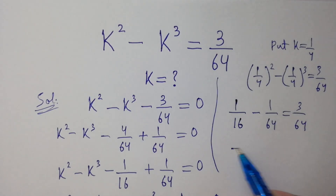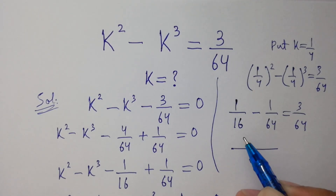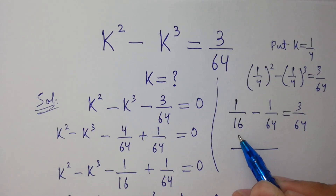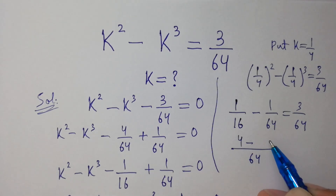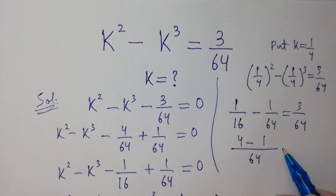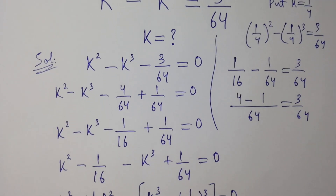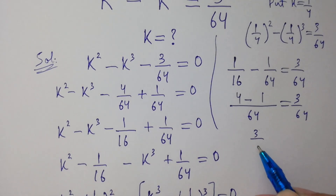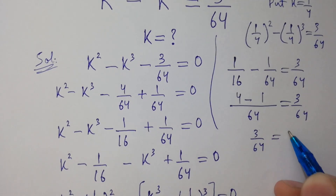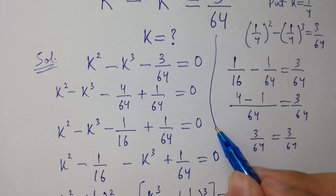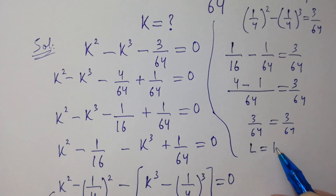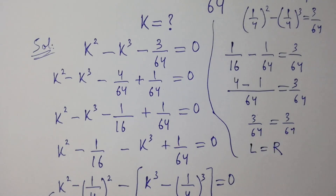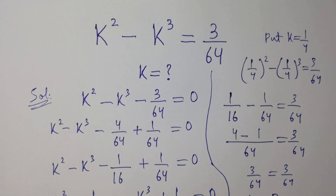Take LCM of 64: 16 times 4 is 64, so 4 over 64 minus 1 over 64 equals 3 over 64. Therefore 4 minus 1 equals 3 over 64. Left hand side equals 3 over 64, which equals right hand side, and this satisfies the original equation.